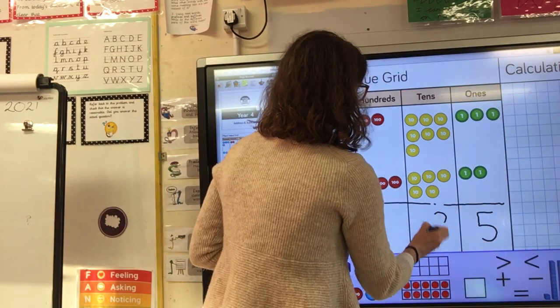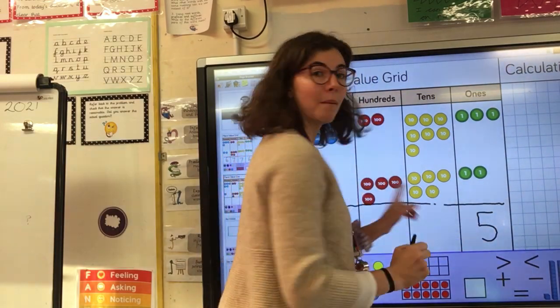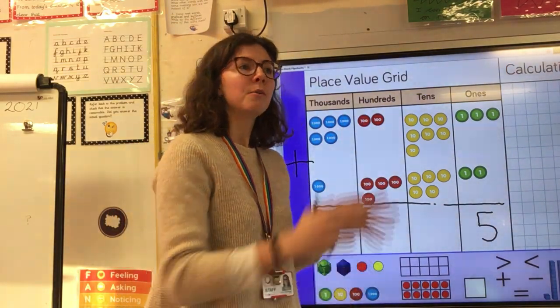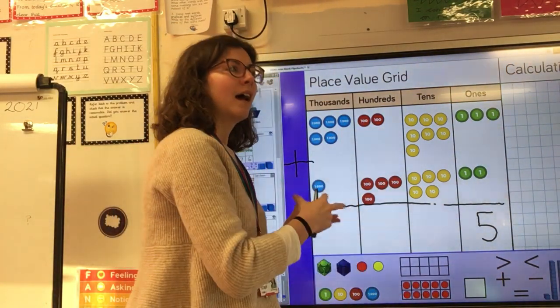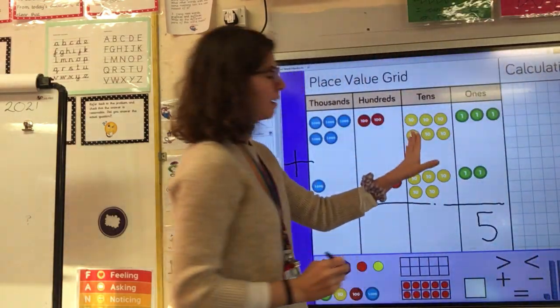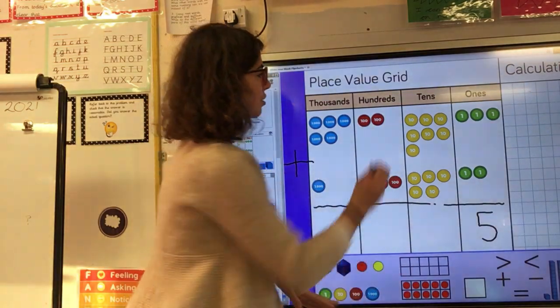When we have more than 10 as the total of one place value column what we need to do is we need to exchange those counters. We need to exchange a 10 and move it into the next column along. So we'll do that together.